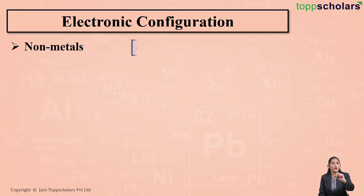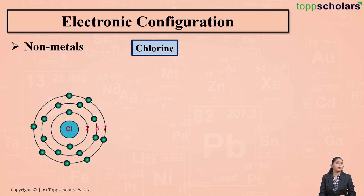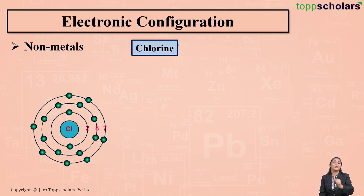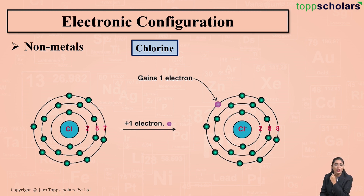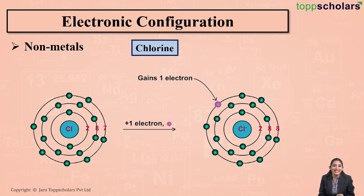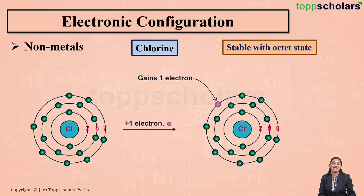What about chlorine? The atomic number of chlorine is 17, so its electronic configuration is 2, 8, 7. There are seven electrons in the outermost shell of chlorine. In order to become stable, chlorine accepts one electron and forms a Cl− anion. There are then eight electrons in the outermost shell, so chlorine gains one electron and becomes stable with the octet state.